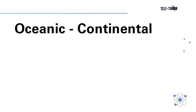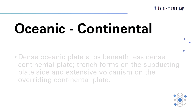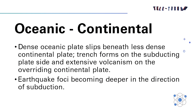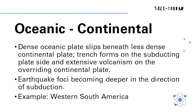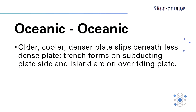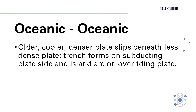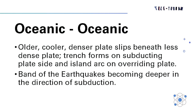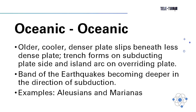First, oceanic to continental: the dense oceanic plate slips beneath the less dense continental plate. A trench forms on the subducting plate side and extensive volcanism occurs on the overriding continental plate. Earthquake foci become deeper in the direction of subduction. An example is western South America. Second, oceanic to oceanic: the older, cooler, denser plate slips beneath the less dense plate. A trench forms on the subducting plate side and an island arc forms on the overriding plate. A band of earthquakes becomes deeper in the direction of subduction. Examples are the Aleutians and Marianas.